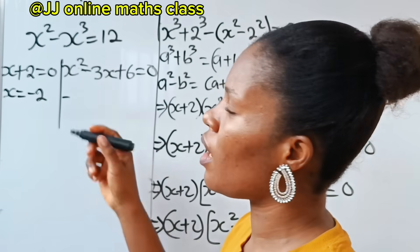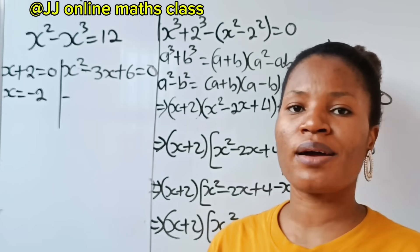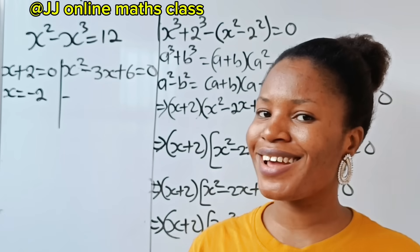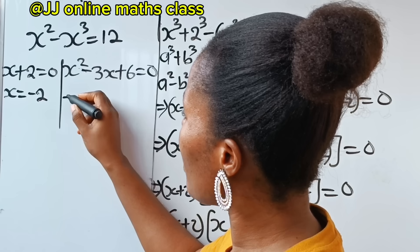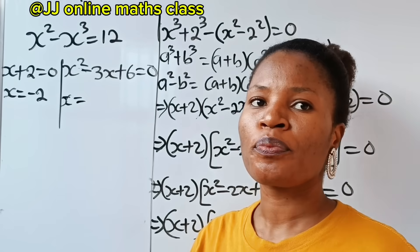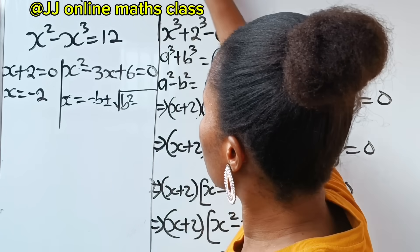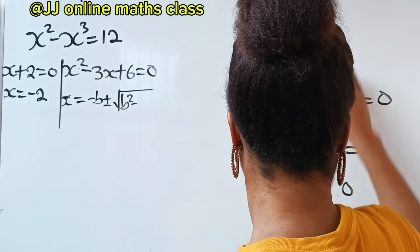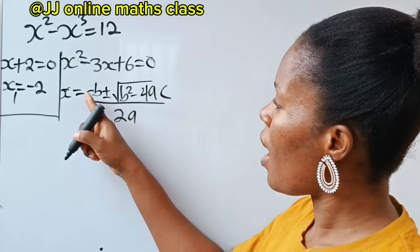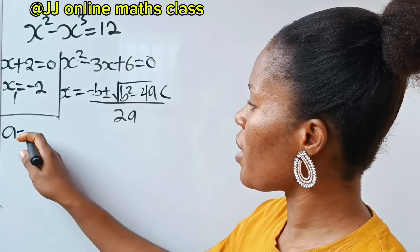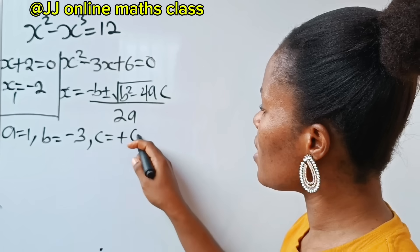For the second part, we are going to use the quadratic equation formula, which states that x is equal to minus b plus or minus square root of b squared minus 4ac, all over 2a. Our a is the coefficient of x squared, which is 1. Our b is the coefficient of x, which is minus 3. And our c is our constant, which is 6.